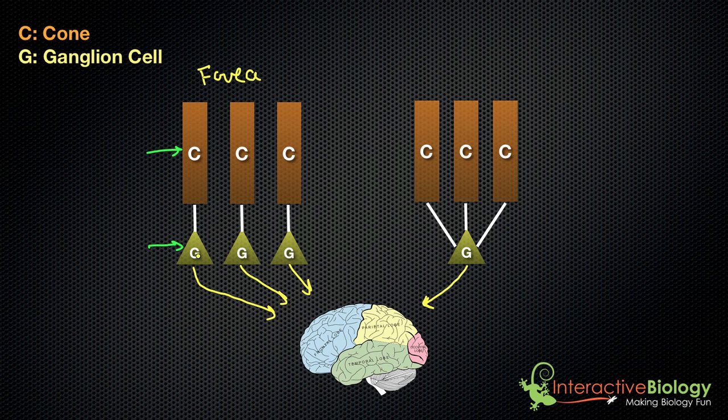So here the receptive field of this ganglion cell is one individual cone, which gives it a lot of detail. So I'm going to say lots of detail.